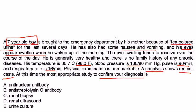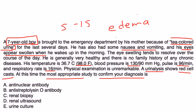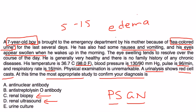He is in the right age category, and the tea-colored urine is the biggest clue. The swollen eyes indicate edema. You want to go for the simplest test first — a renal biopsy is too invasive, and ultrasound is expensive. Given the suspicion of post-strep glomerulonephritis, the answer is the anti-streptolysin O antibody level.